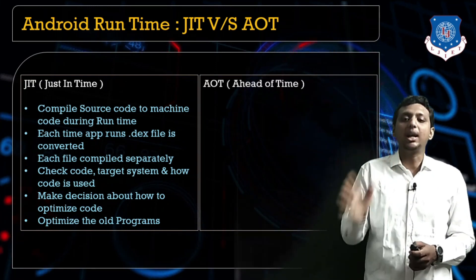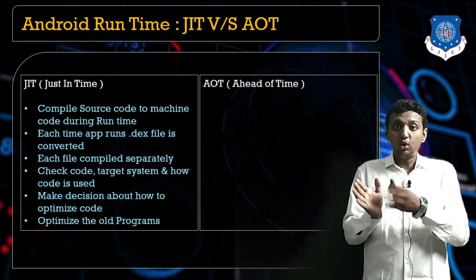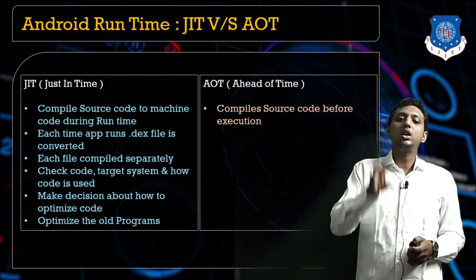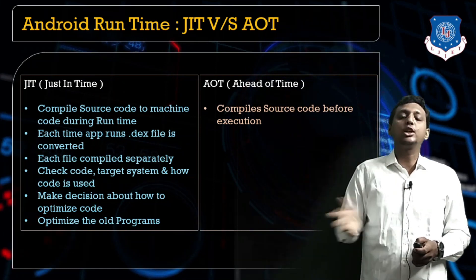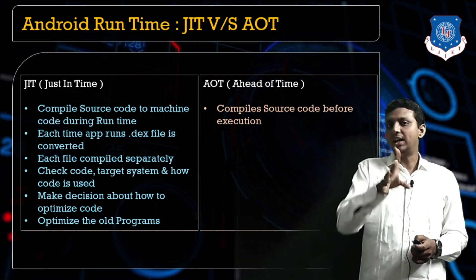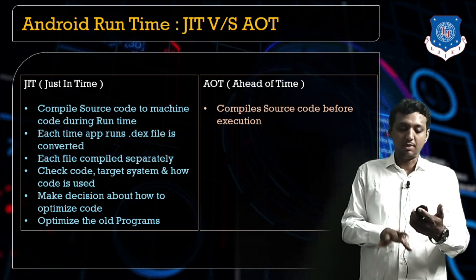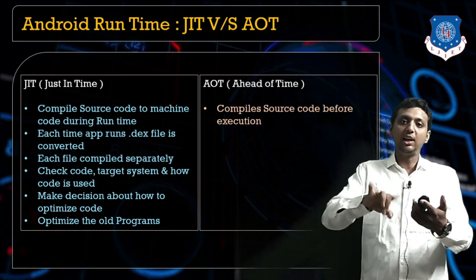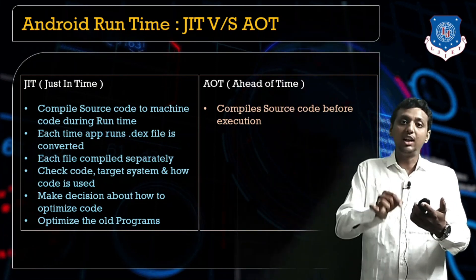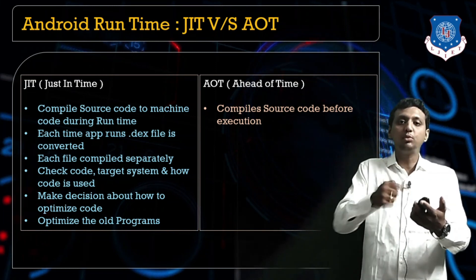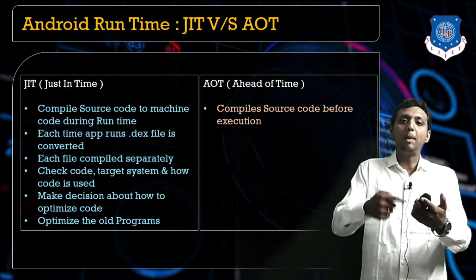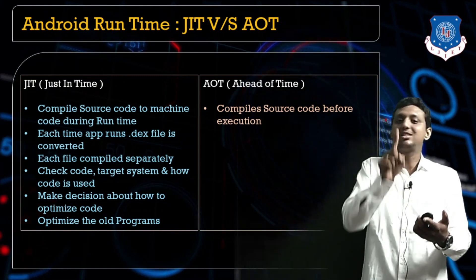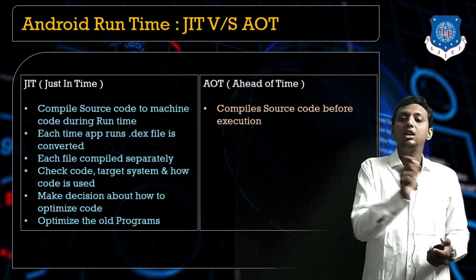AOT stands for Ahead-Of-Time — that means the code is automatically compiled before running. So when is my code compiled? For example, I've installed WhatsApp. I unlock my phone and click on WhatsApp — the application is running. With JIT, at the running time stage, my code is getting compiled and converted into machine-level instructions. That is known as Just-In-Time.